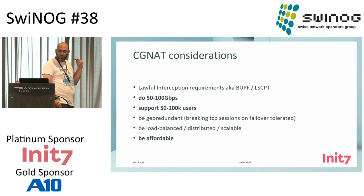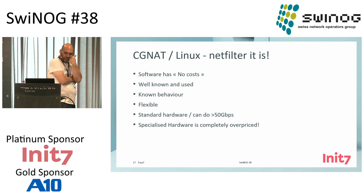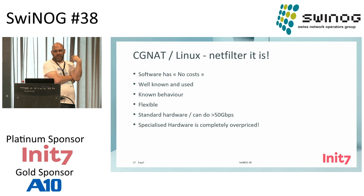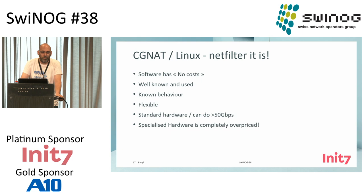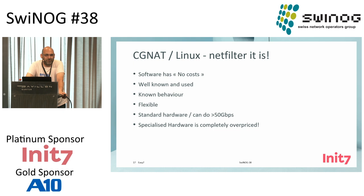We want good performance and it should be affordable. Linux is virtually free — I say virtually because everything has a cost. It is well known and used, the behavior of the NAT is known, it is flexible, there are many ways to do it, and you run it on standard hardware — nothing fancy, nothing crazy. Specialized hardware to do CGNAT exists, but if you're interested, just ask your favorite vendor — you'd be surprised how much that costs.